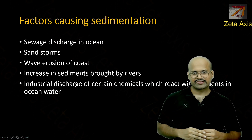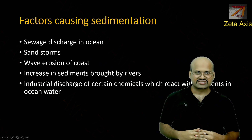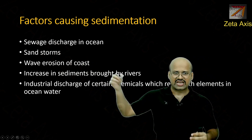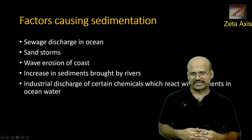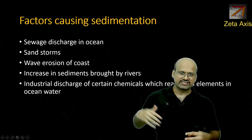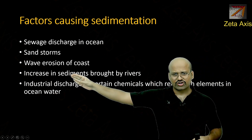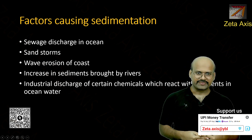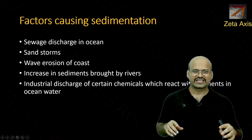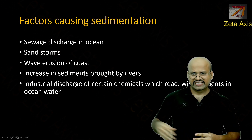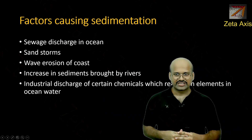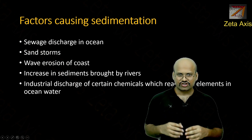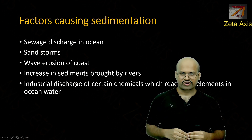What are the major causes for sedimentation? The first is sewage discharge into the ocean — large cities discharge their sewage into the oceans, increasing sedimentation near coastal areas. Sandstorms can also bring large amounts of sand into the ocean. Wave erosion erodes beaches, increasing sedimentation. Large amounts of sediment are brought by rivers — in India, rivers like the Ganga or Indus bring a lot of sediment and dump it in the ocean, meaning areas with deltas have high sedimentation. Industrial discharge of certain chemicals also reacts with elements in ocean water to form sediments.